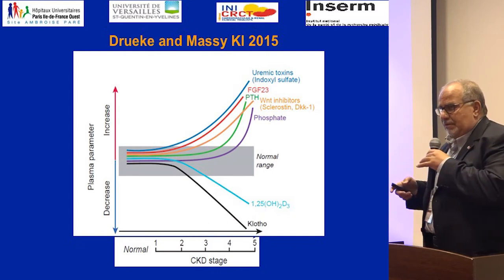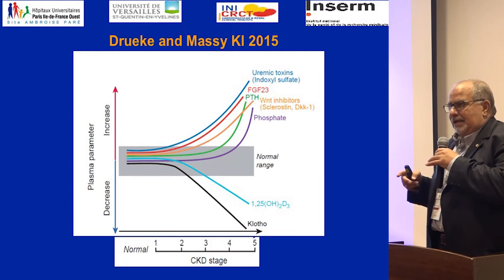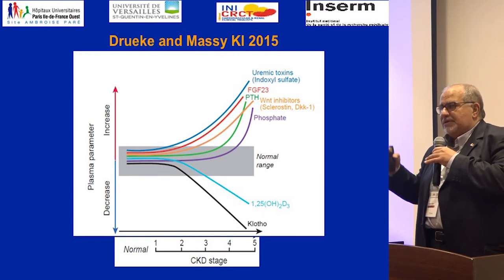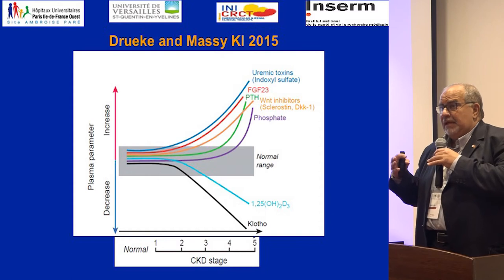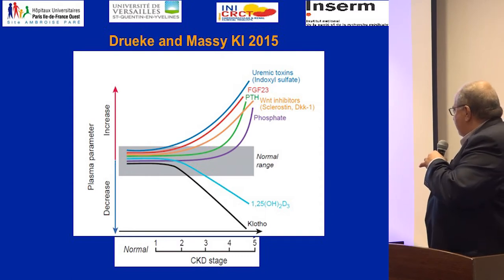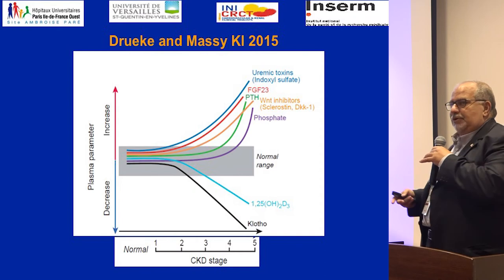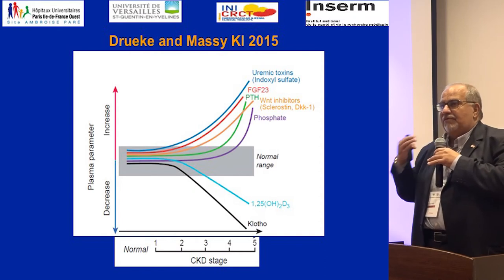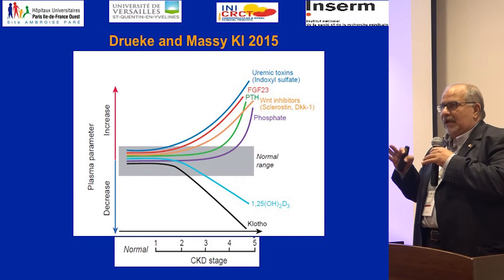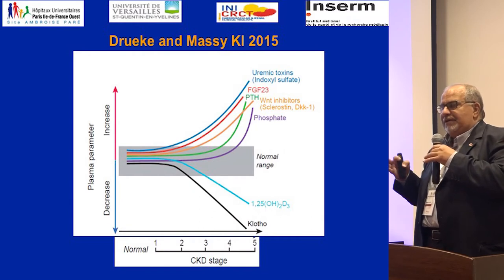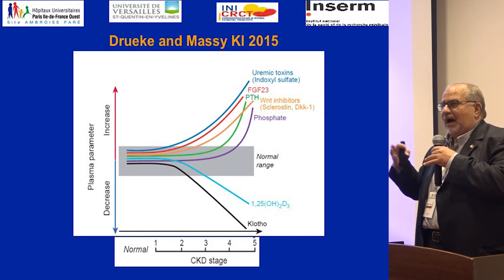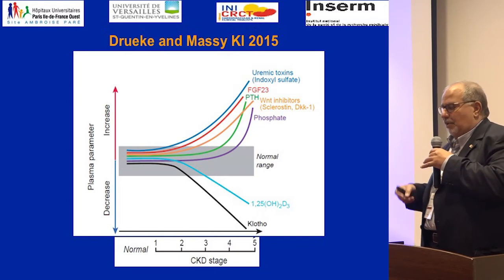Uremic toxicity may not only be accumulation — you can also lose some materials, as you know, for erythropoietin and for vitamin D. So it is not completely covered by this uremic toxin concept. Uremic toxicity goes beyond uremic toxins.